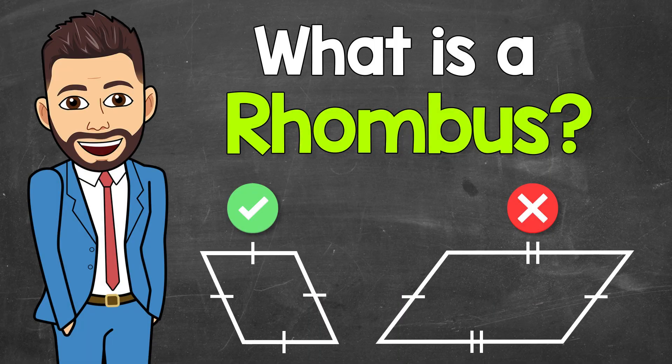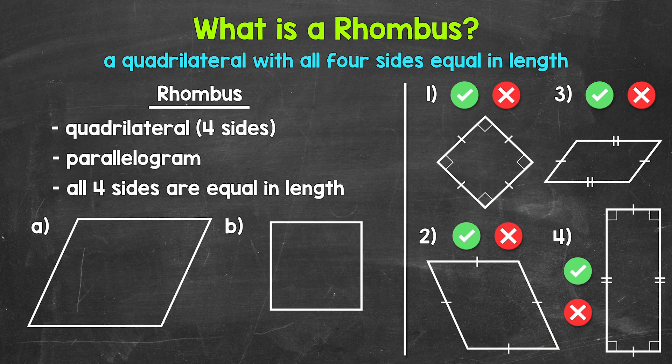Welcome to Math with Mr. J. In this video, I'm going to cover what a rhombus is. Simply put, a rhombus is a quadrilateral with all four sides equal in length. Let's take a look at some examples and dive in a little further.